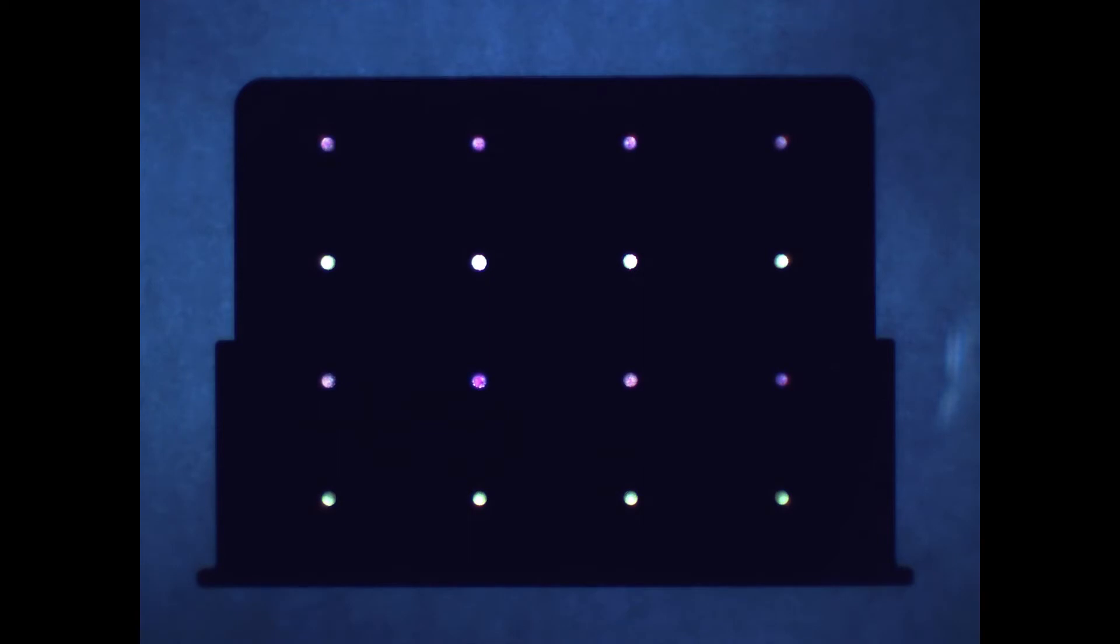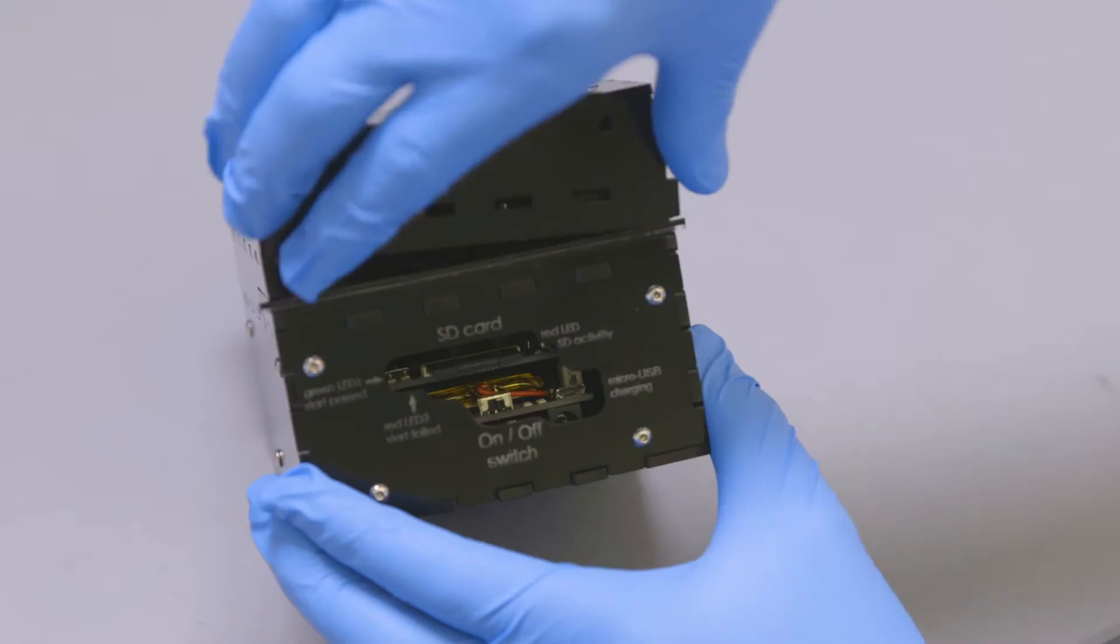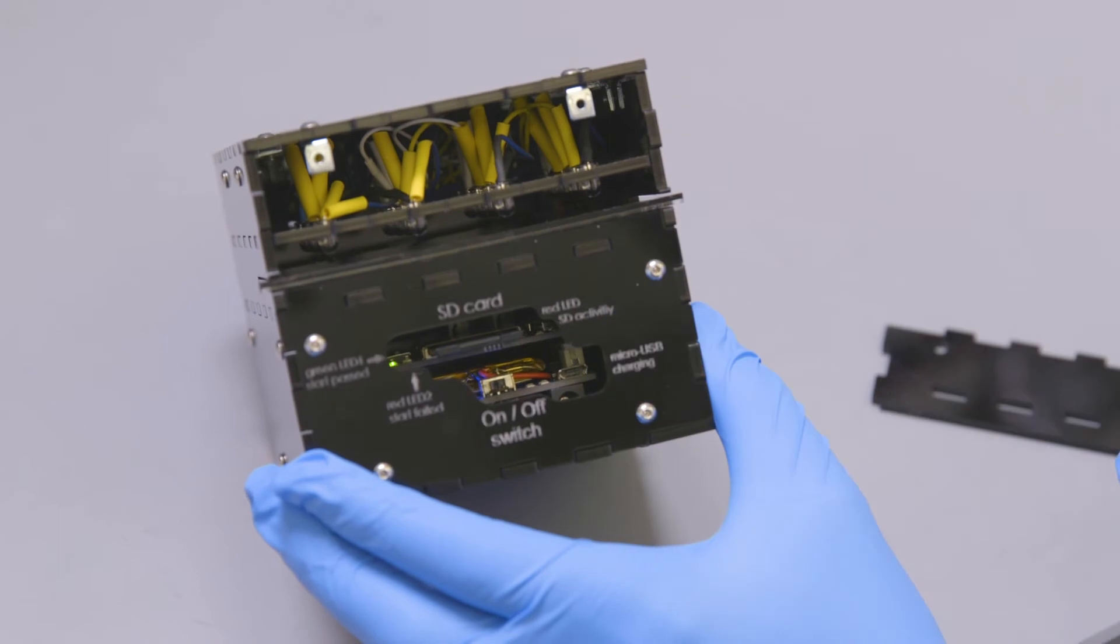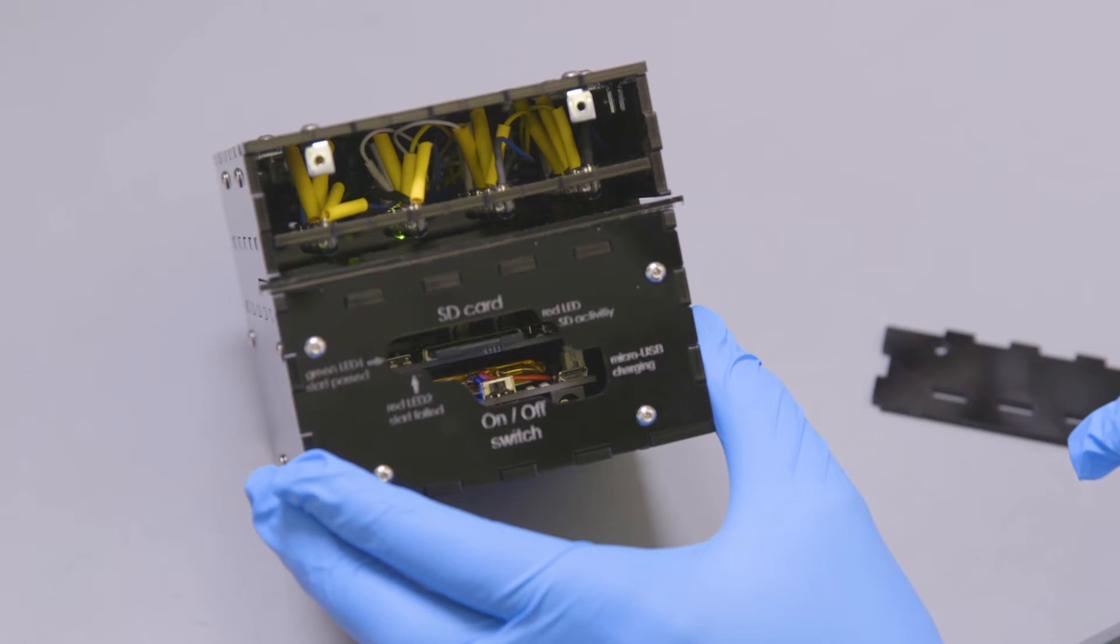The components of the reader are as follows. The first layer is the LED layer. As the diagnostic reactions proceed, the light from the LED is blocked from shining through the paper. The LEDs are turned on one at a time to ensure minimal well-to-well crosstalk.